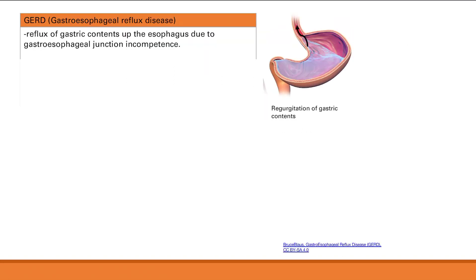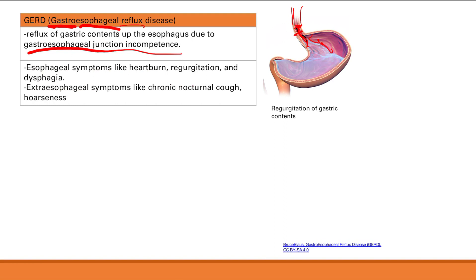Next is GERD — gastroesophageal reflux disease. It's reflux of contents from the stomach into the esophagus. Normally you have a lower esophageal sphincter, but if that's incompetent, all the acidic contents in your stomach can go up. Your esophagus is not prepared for this, so you're going to get symptoms like heartburn, regurgitation, dysphagia, and an acidic taste in your mouth from all that stomach acid.